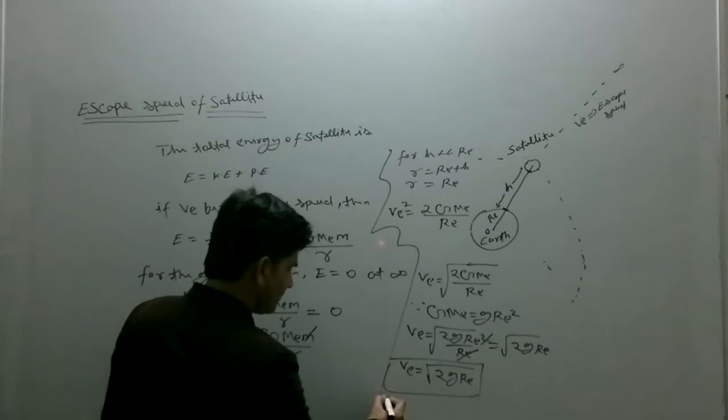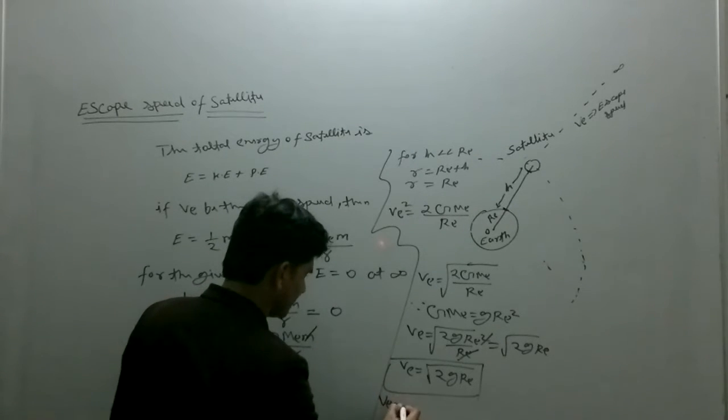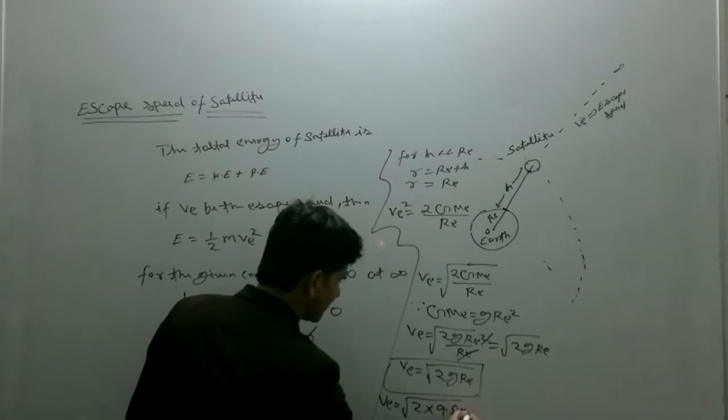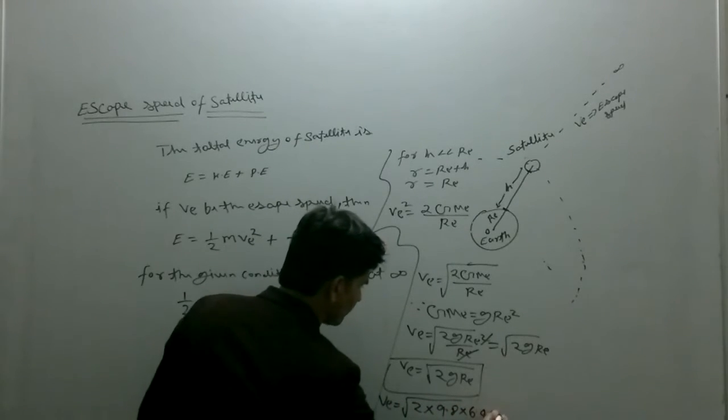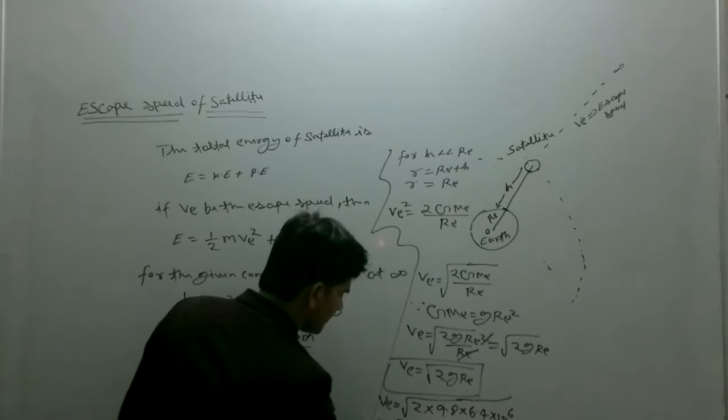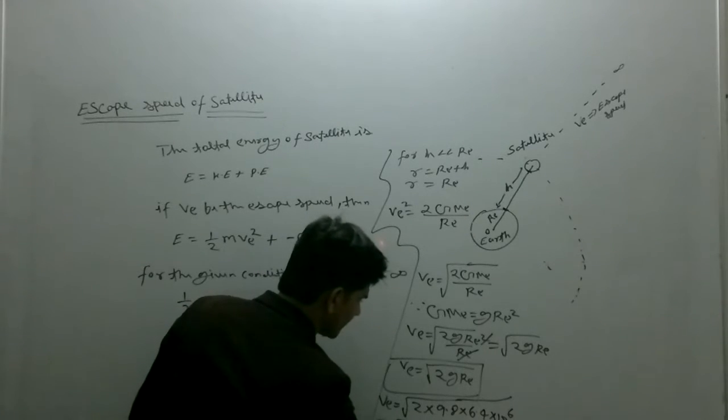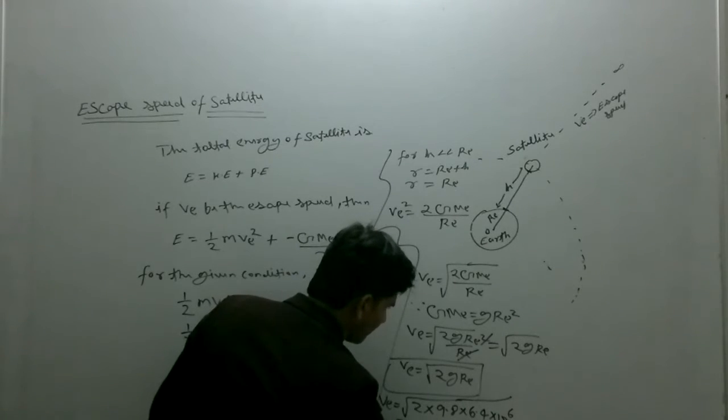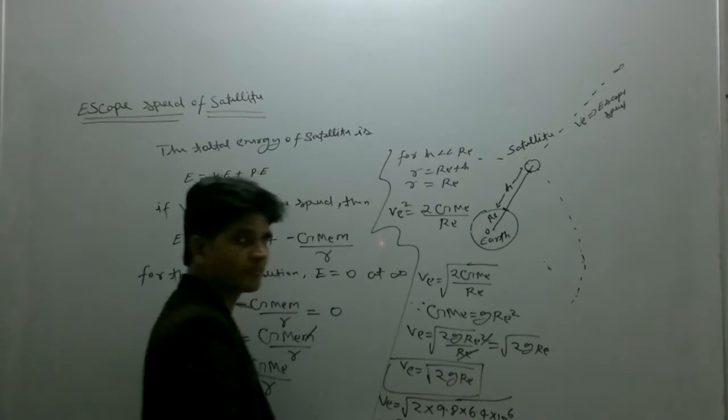v_e equals to square root of 2 times 9.8 and R_e is 6.4 into 10^6. That is, it can be written as 2 into 49 into 2 into 64 into 10^4.